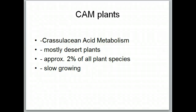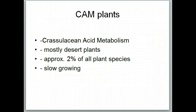In this section, we want to talk about the CAM plants. In the previous sections, we talked about photorespiration and the C3 and C4 plants. These CAM plants represent another variation on photosynthesis. The word CAM stands for Crassulacean Acid Metabolism. The 'Crassulacean' part refers to a family of cacti — that family name is Crassulacean — and that's where the name comes from.